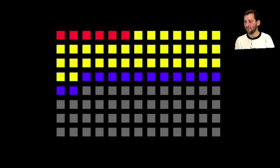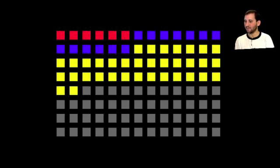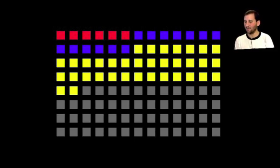It may even go further and rearrange the files completely to optimize them — for example, if purple is used more than yellow, it may put purple earlier on the hard disk where it's easier and quicker to access.